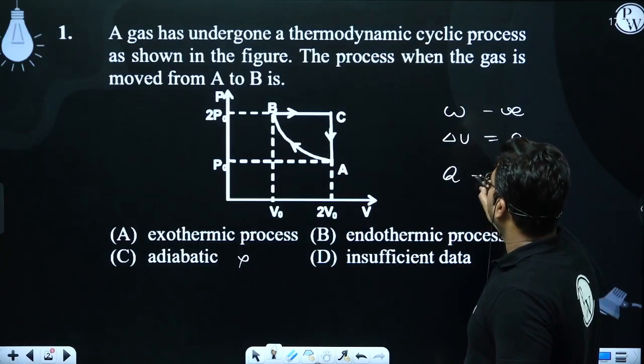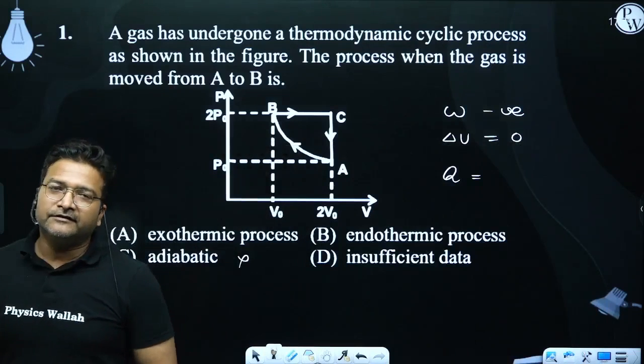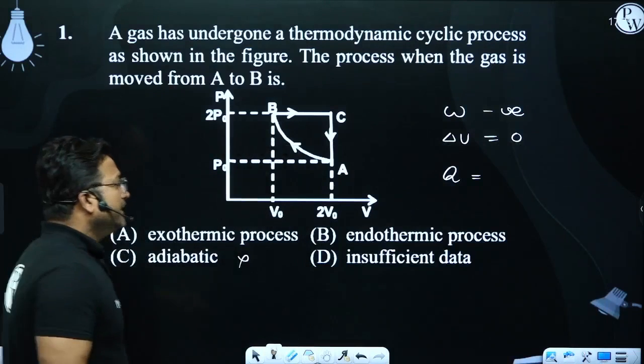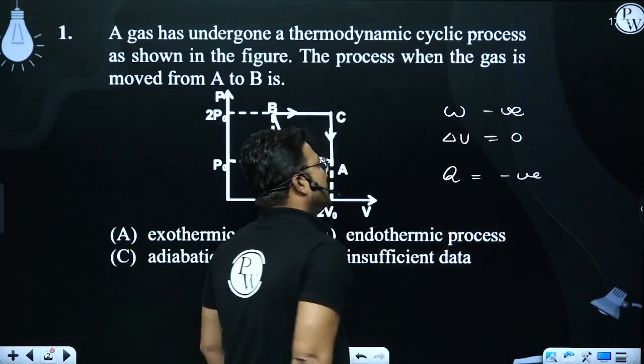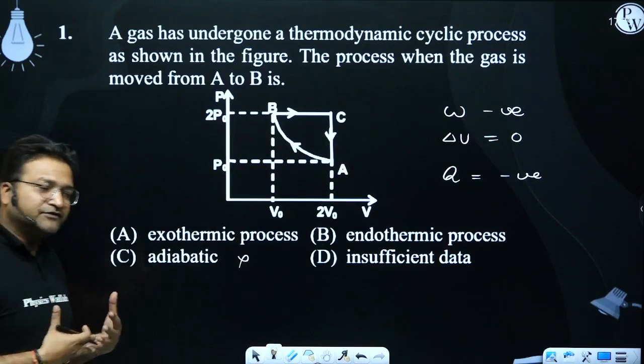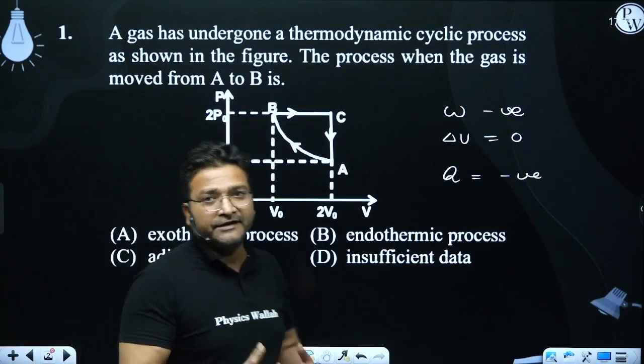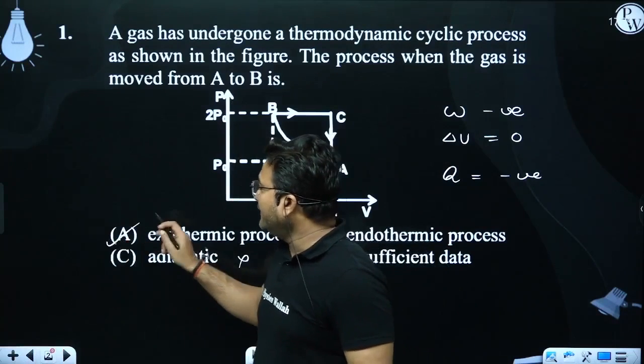So if we look at Q, the heat received by gas, which is the sum of the negative, this means that the gas rejects heat. If a system rejects heat, the atmosphere gives us the exothermic process. So the answer is A.